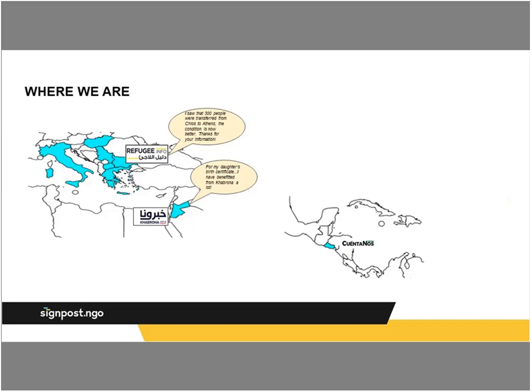We're currently in seven countries: Greece, Serbia, Bulgaria, Hungary, and Italy in Europe; Jordan in the Middle East; and El Salvador in Latin America. We're definitely looking to expand globally. We've prioritized North and West Africa so we can catch people along their migration routes and make sure they're as informed as possible. In the Middle East, we're exploring expanding into Iraq. We're also keeping an eye on Latin America, particularly in relation to the Venezuela migrant crisis, and talking to partners there.